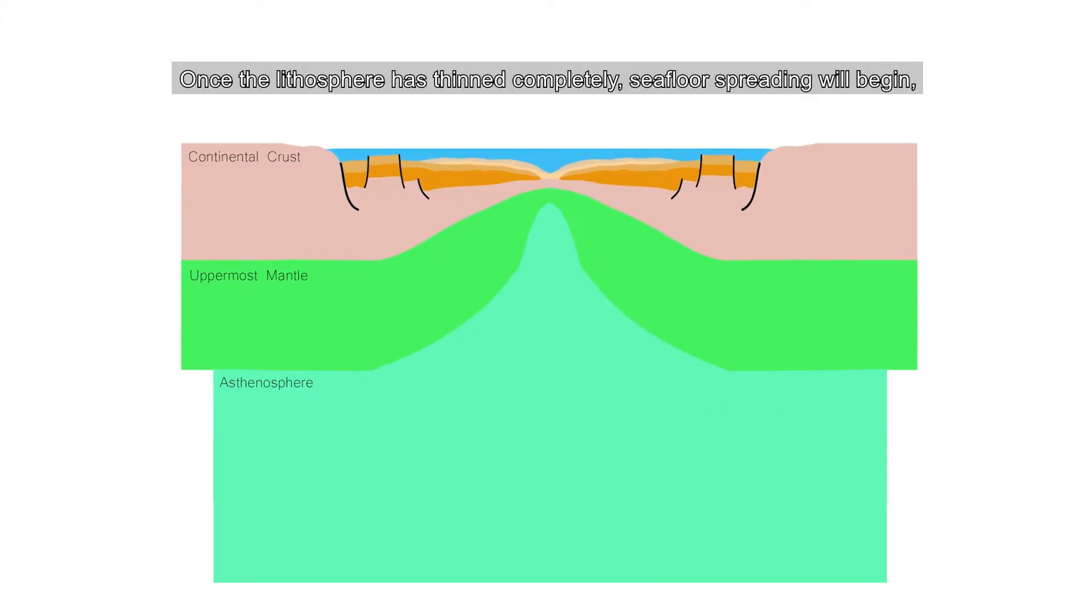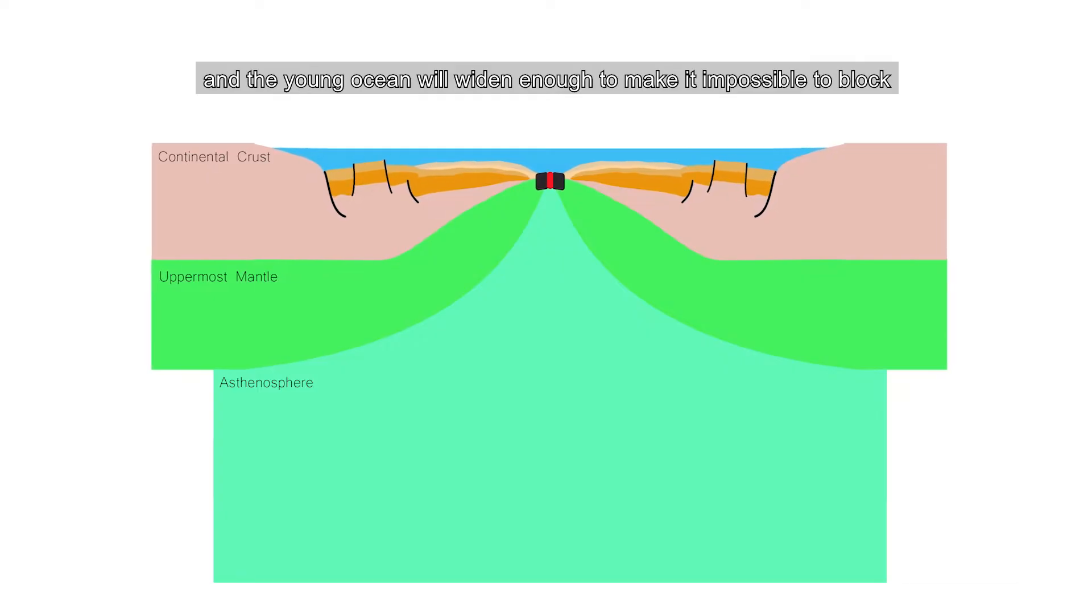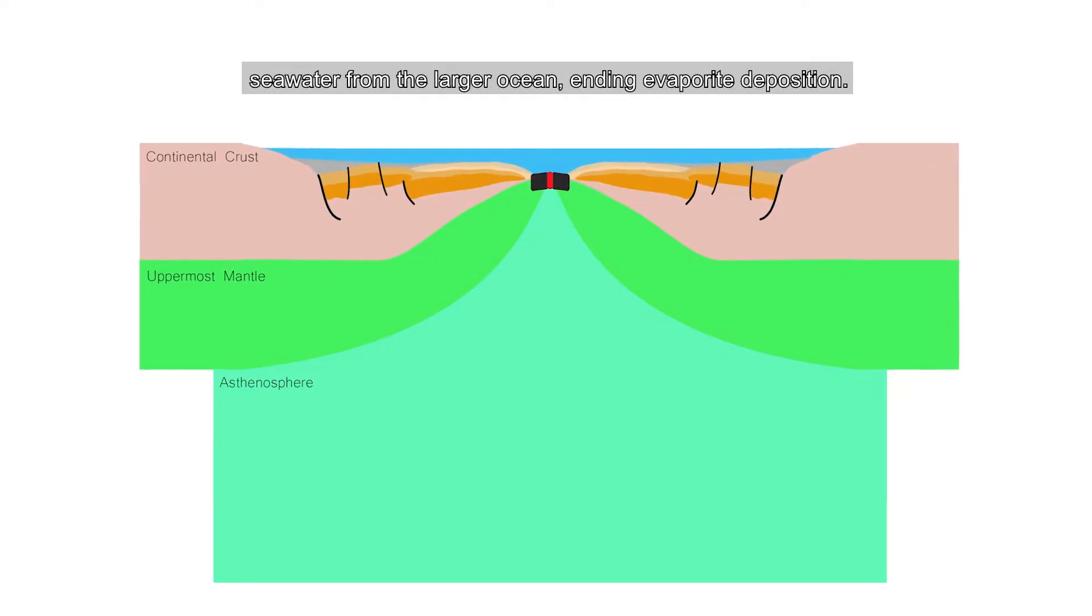Once the lithosphere has thinned completely, seafloor spreading will begin, and the young ocean will widen enough to make it impossible to block seawater from the larger ocean, ending evaporite deposition.